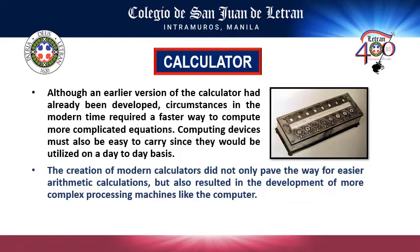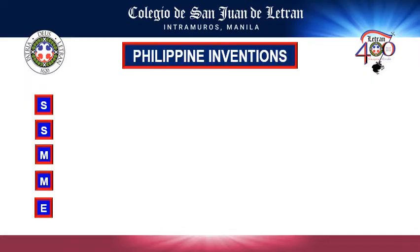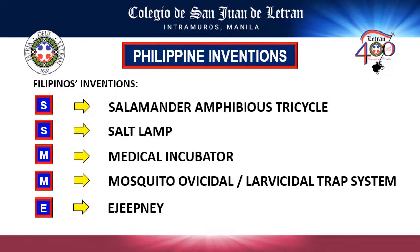The creation of the calculator paved the way in the development of more complex processing machines like computers. Let's now move on to the last part of the chapter: Philippine inventions. Just remember the acronym ASMSE: S stands for Salamander Amphibious Tricycle, S stands for salt lamp, M stands for medical incubator, M stands for Mosquito Ovicidal or Larvicidal Trap System, and EE stands for e-jeepney.